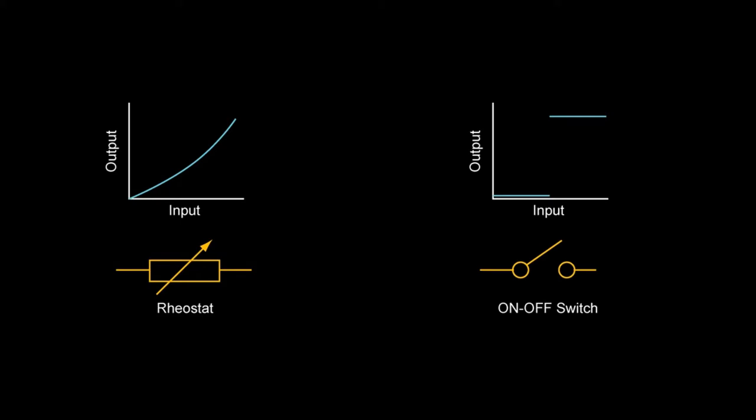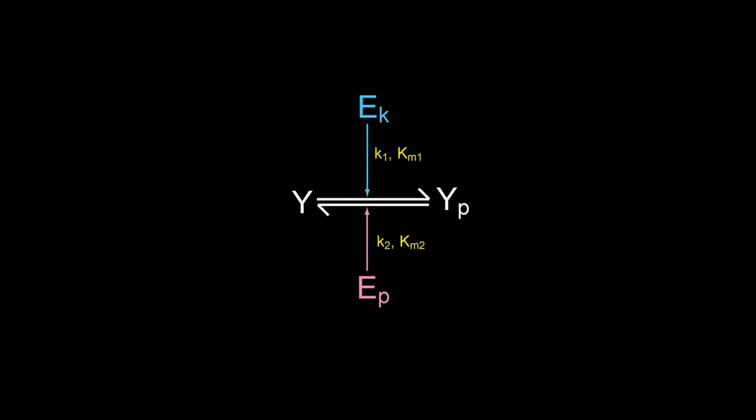Here is a molecular switch. Suppose E_k is a kinase that phosphorylates Y to Y_p. E_p is a phosphatase that dephosphorylates Y_p. Both reactions follow Michaelis-Menten kinetics. I have considered protein phosphorylation and dephosphorylation, but you can consider any other enzymatic modification of Y. For this switch, E_k is the input.